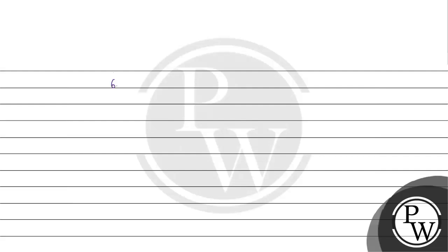So, Avogadro's number is 6.022 × 10²³ mol⁻¹. Number of molecules = 6.022 × 10²³ × (0.046 / 46). Writing 0.046 as 46 × 10⁻³, the 46s cancel, giving us 6.022 × 10²⁰.